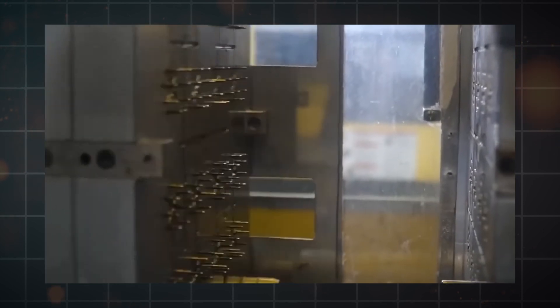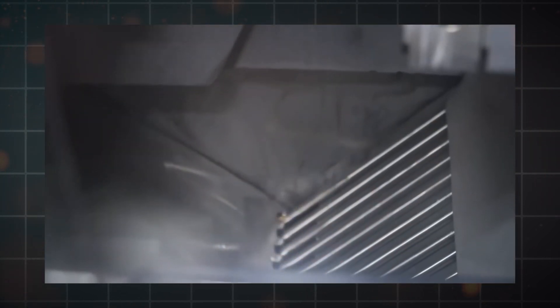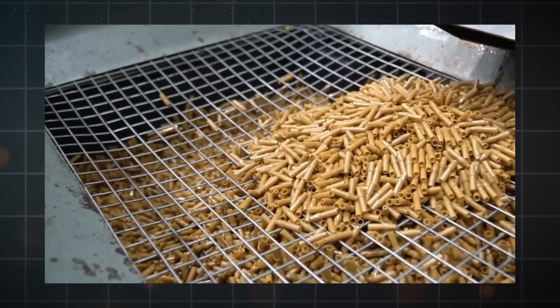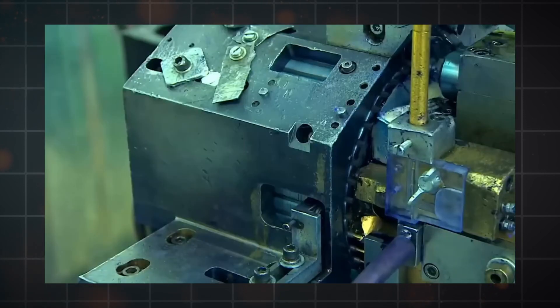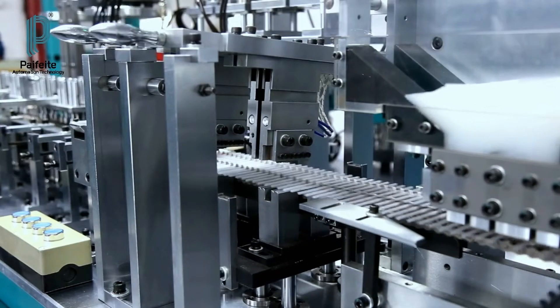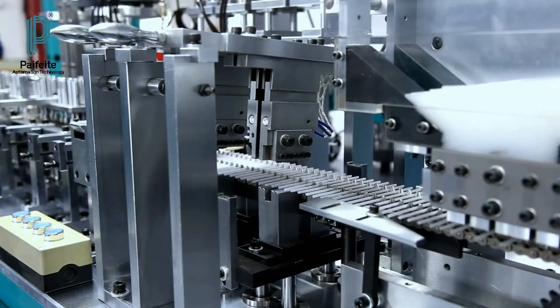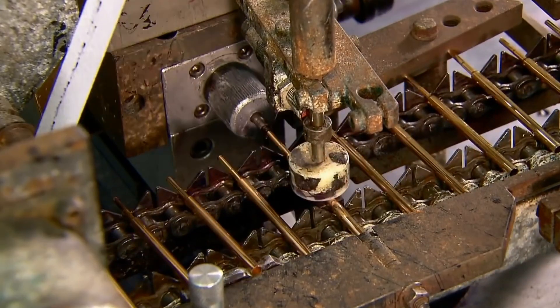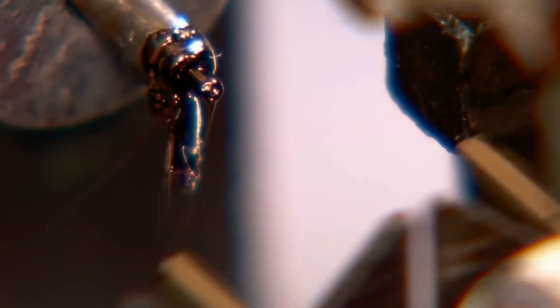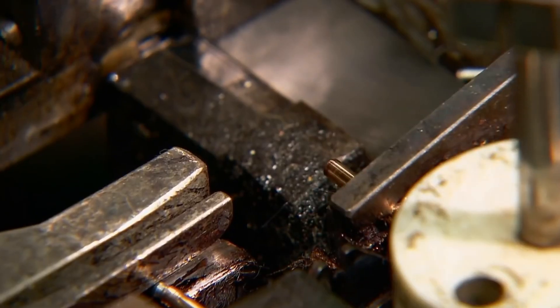Once the metal parts are shaped, they're cooled and then go through a finishing process to get rid of any rough edges and give them a polished look. This careful attention to detail makes sure that the metal parts not only work well but also add to the pen's overall sleek look. This step of shaping the metal parts is important because it directly affects how well the pen works, from how it feels in your hand to how it writes on paper.